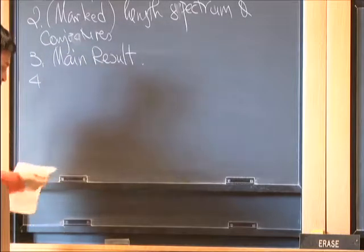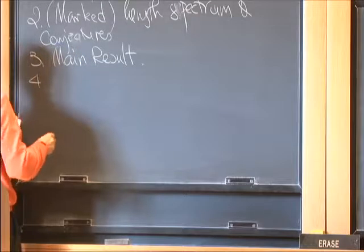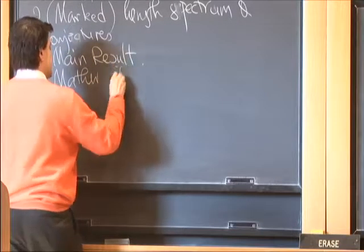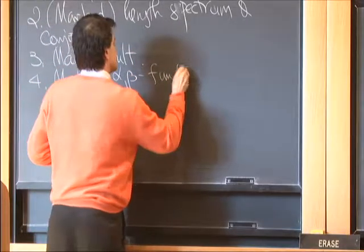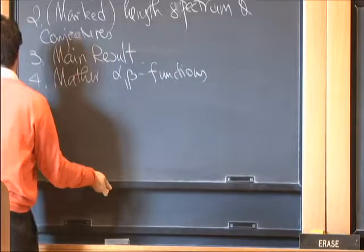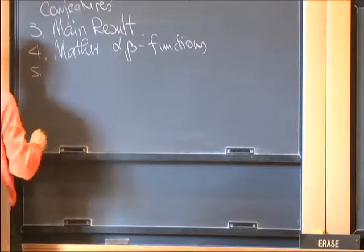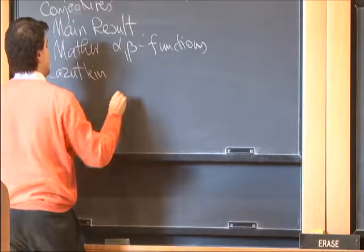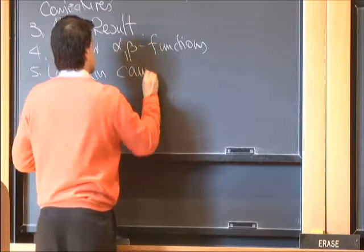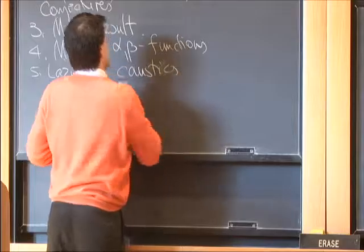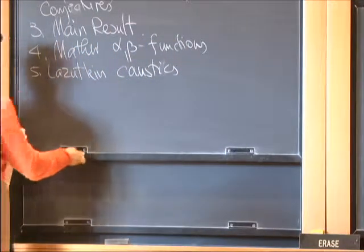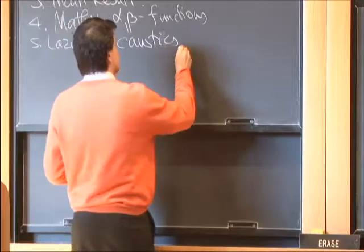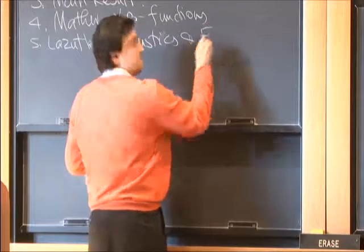In order to explain what we call the extension problem, I need to introduce the so-called Mather alpha and beta functions. After I introduce Mather beta functions, I need to explain Lazutkin caustics. After I explain Lazutkin caustics, I'll tell you that Lazutkin caustics are, in a sense, symplectic invariants.